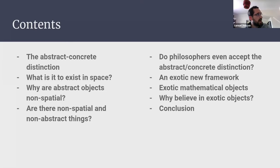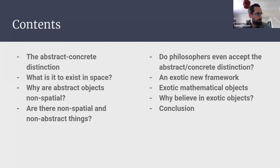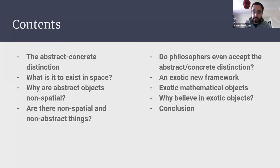Then I'll start asking whether we've ever actually thought the abstract/concrete distinction is exhaustive, looking at some examples and the general philosophical literature. Then I'll talk about the exotic objects framework for discussing these in-between objects, illustrate it with mathematical objects, and finish with some general advantages of the account.